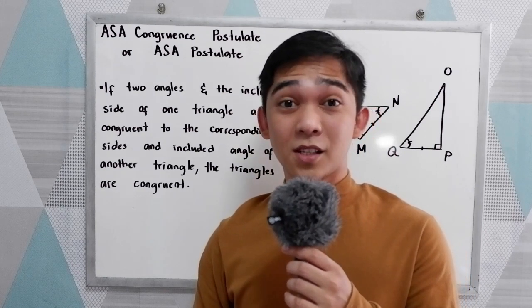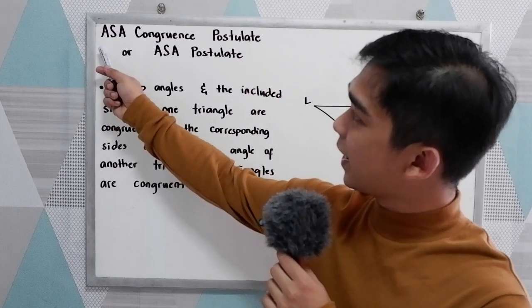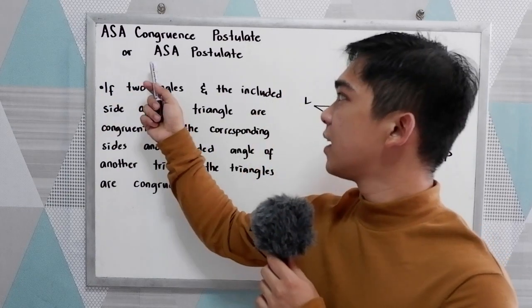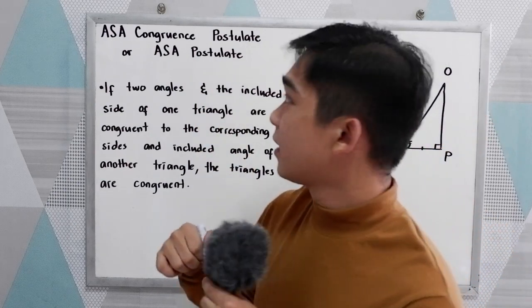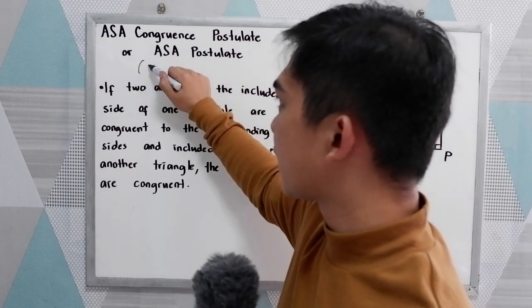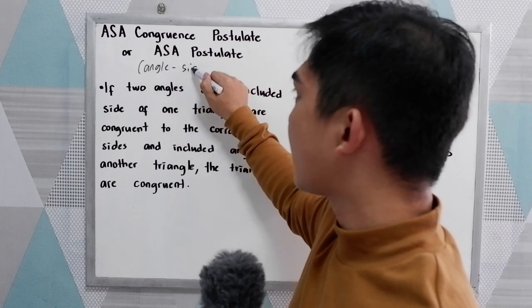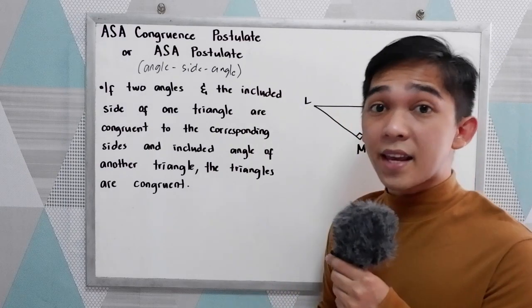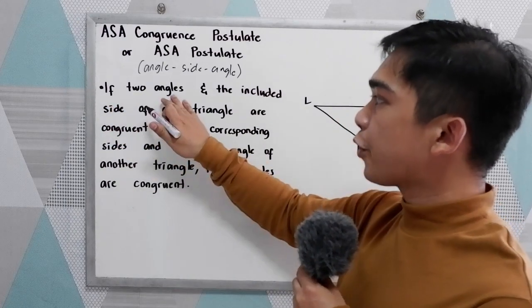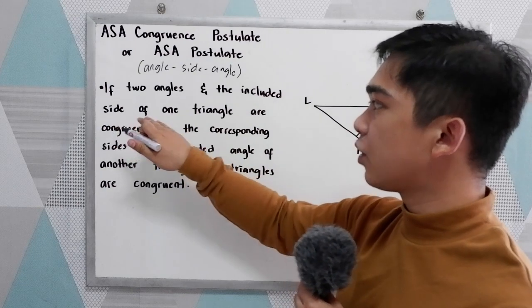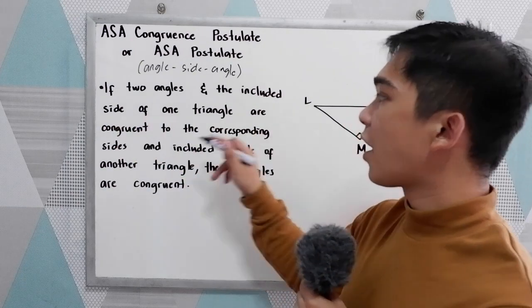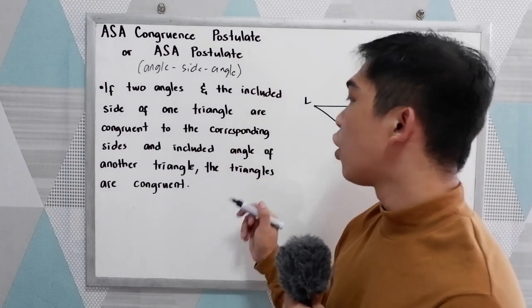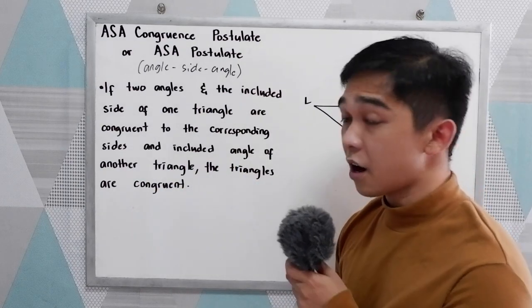Good day everyone. Today I will be discussing the ASA congruence postulate, or simply known as the ASA postulate. ASA stands for the angle-side-angle postulate. The postulate states that if two angles and the included side of one triangle are congruent to the corresponding angles and the included side of another triangle, the triangles are congruent.